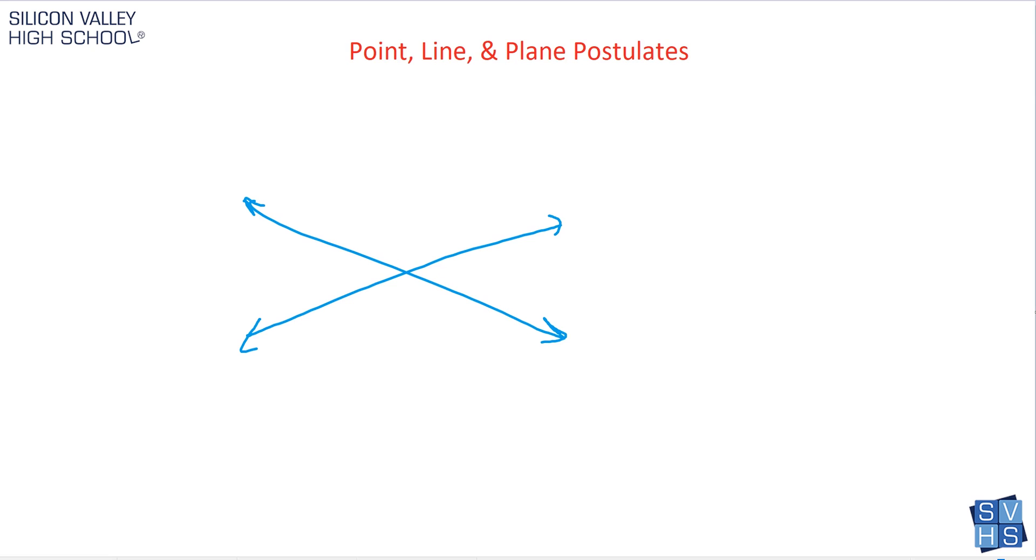then they intersect at exactly one point here, not two points, not three points. If two lines, in fact, intersect, they intersect at exactly one point.